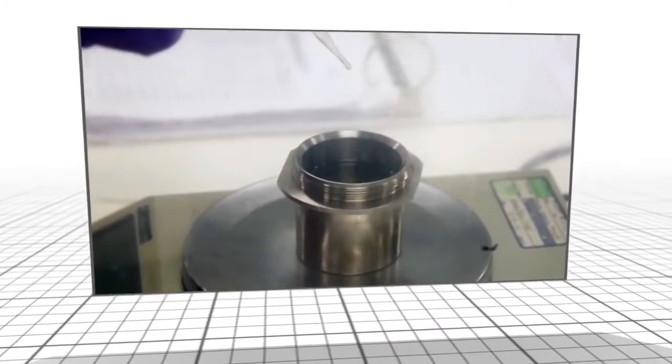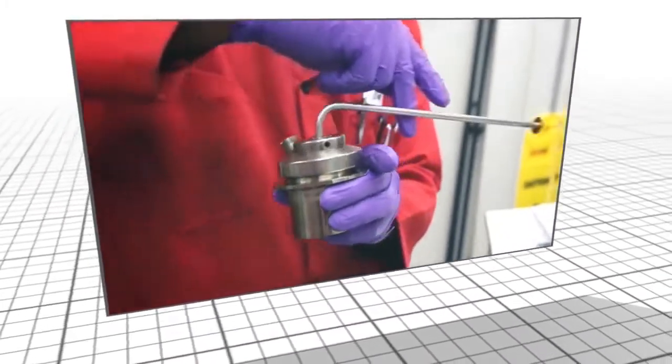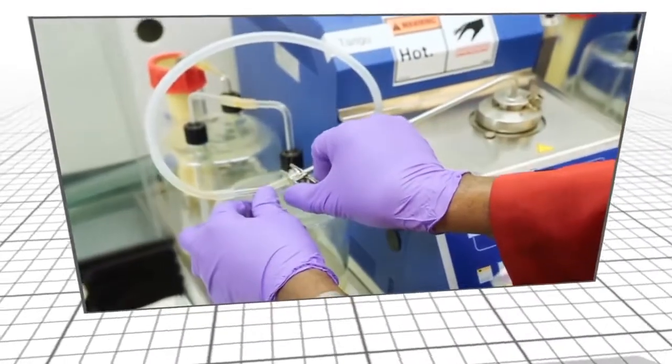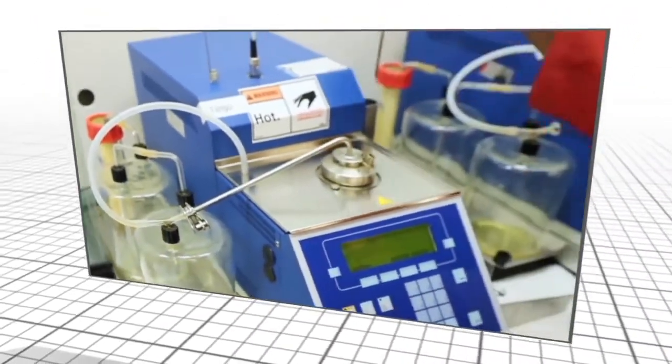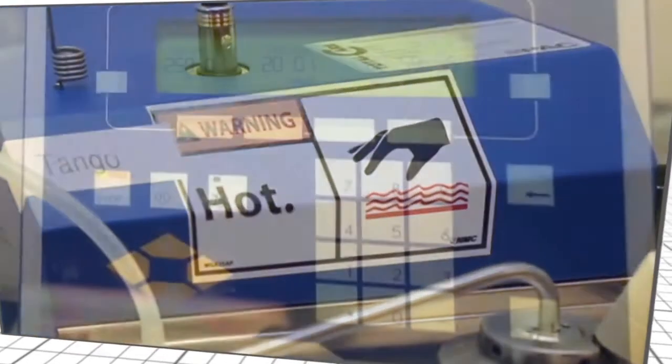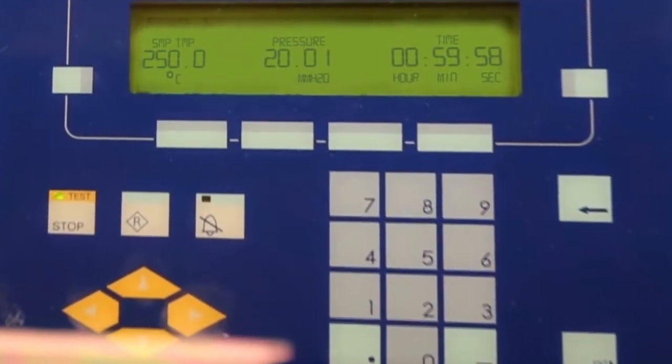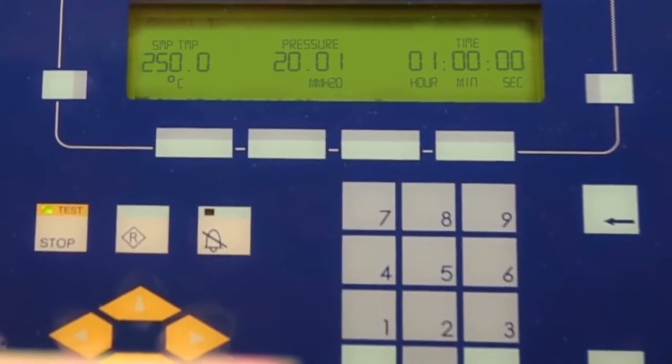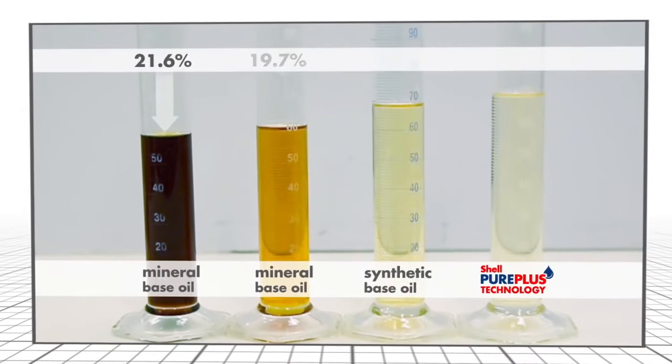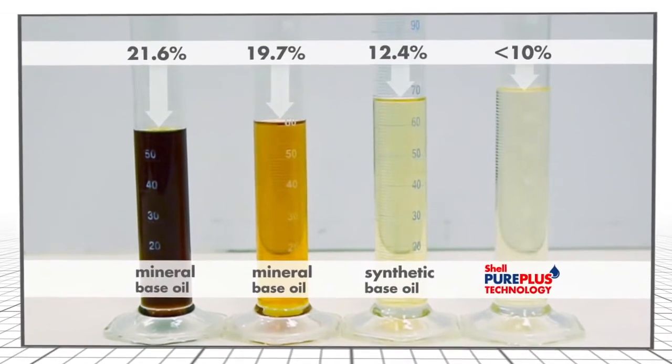Oils at high engine temperatures are prone to evaporation. Shell subjected PurePlus technology base oils to the industry standard NOAC test which required heating the oil to 250 degrees centigrade for one hour. It's clear from the results that the PurePlus technology oil has superior resistance to evaporation.